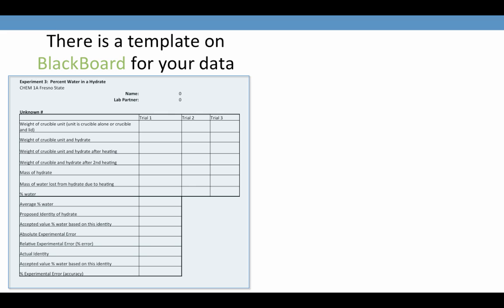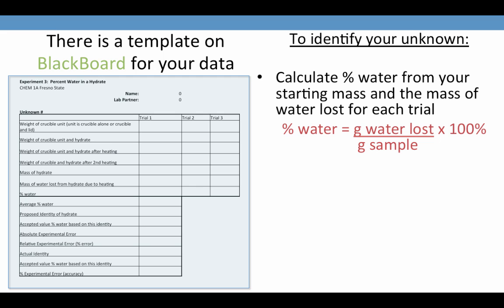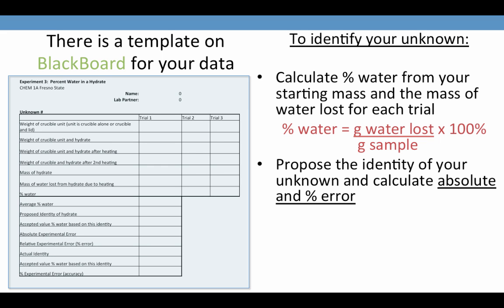There is a template on Blackboard for you to use to record and analyze your data. This data will be used to identify your unknown hydrate. Begin by calculating the percent water from the starting mass of your hydrate and the mass of the water lost, so that percent water is equal to the ratio of water lost divided by grams of sample times 100%. Based on the percent water, compare these to the hydrates that you looked at in your pre-lab, and propose the identity of your unknown. Then calculate the absolute and percent error based on this proposal.